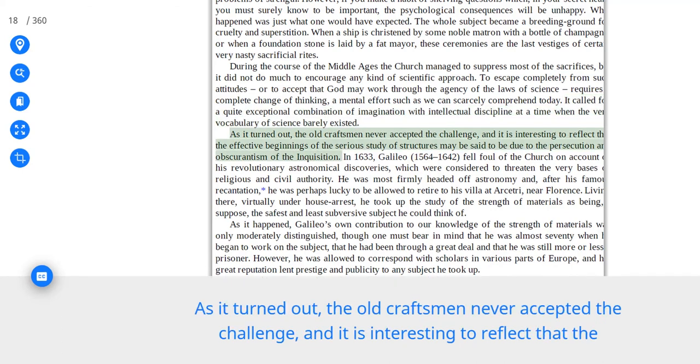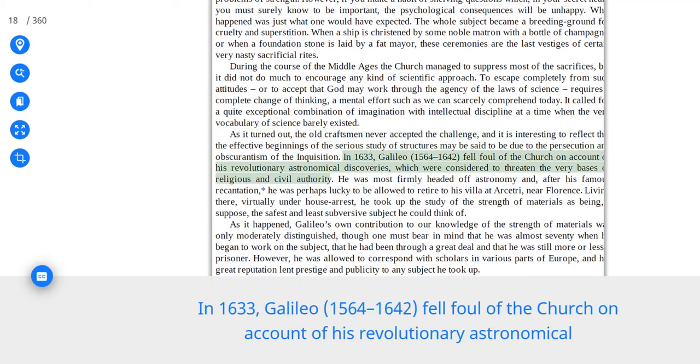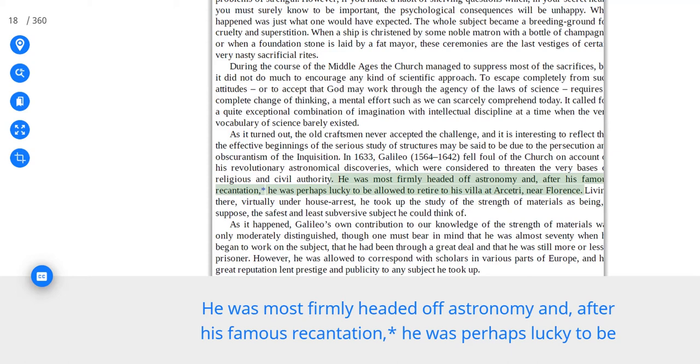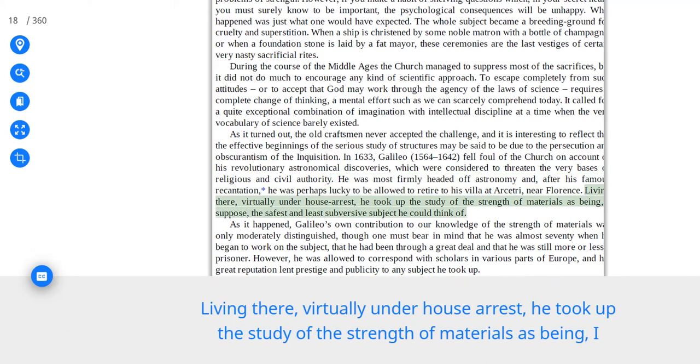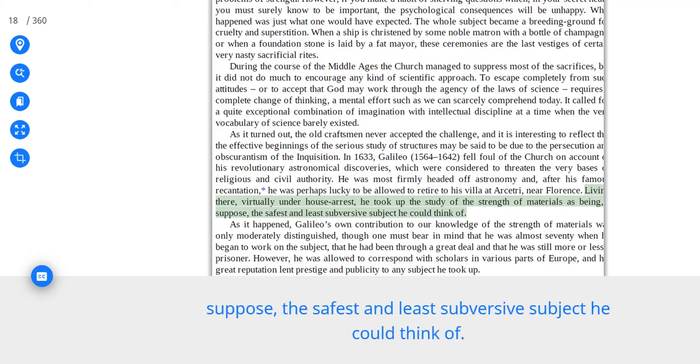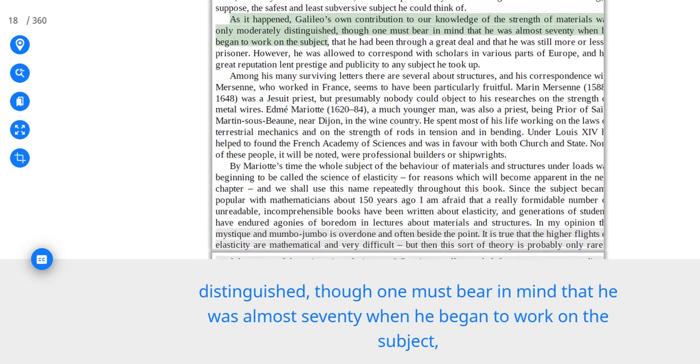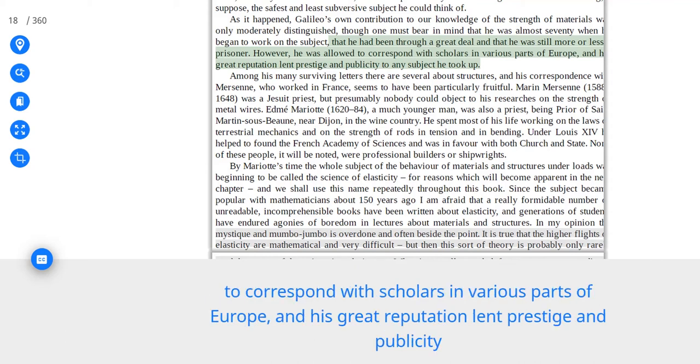As it turned out, the old craftsman never accepted the challenge, and it is interesting to reflect that the effective beginnings of the serious study of structures may be said to be due to the persecution and obscurantism of the Inquisition. In 1633, Galileo fell foul of the Church on account of his revolutionary astronomical discoveries, which were considered to threaten the very bases of religious and civil authority. He was most firmly headed off astronomy and, after his famous recantation, he was perhaps lucky to be allowed to retire to his villa at Arcetri, near Florence. Living there, virtually under house arrest, he took up the study of the strength of materials as being, I suppose, the safest and least subversive subject he could think of. As it happened, Galileo's own contribution to our knowledge of the strength of materials was only moderately distinguished, though one must bear in mind that he was almost seventy when he began to work on the subject, that he had been through a great deal and that he was still more or less a prisoner.